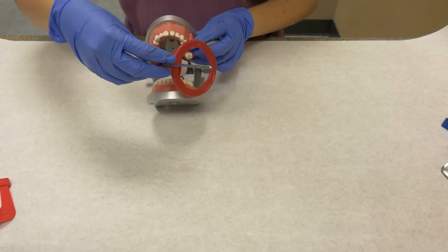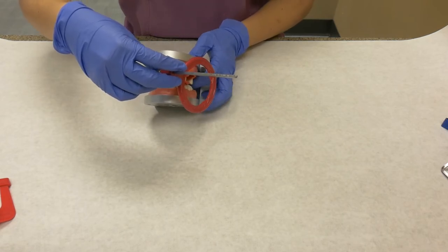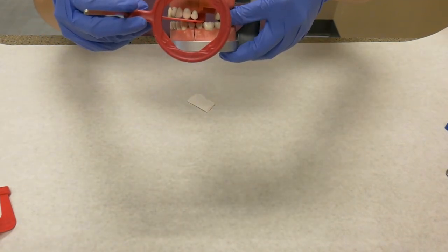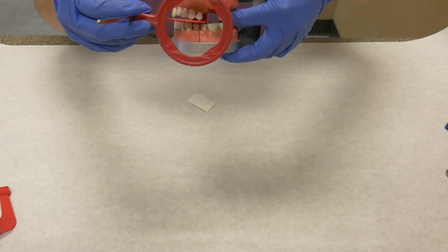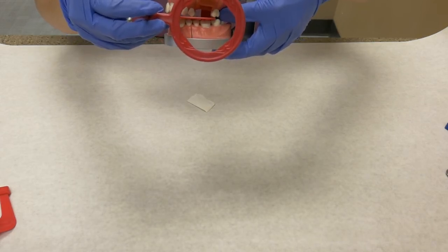This setup is used for a premolar bite wing, which is placed around the second premolar, and a molar bite wing that is placed around the second molar.